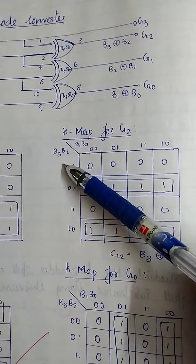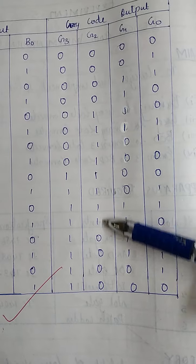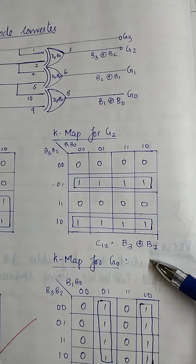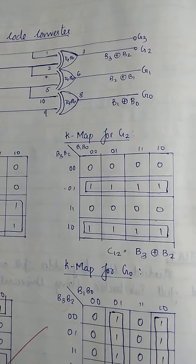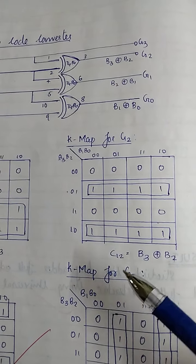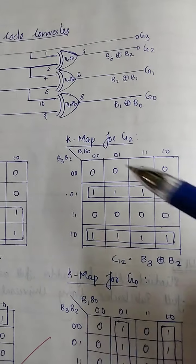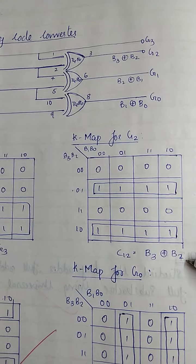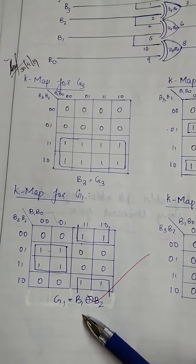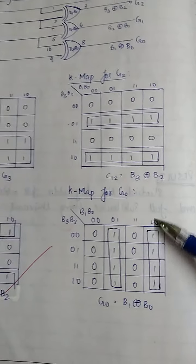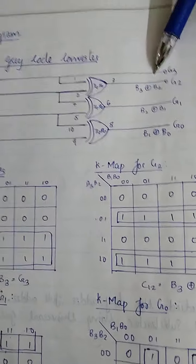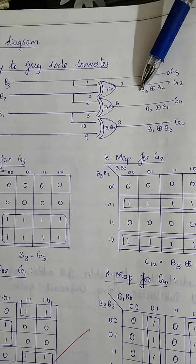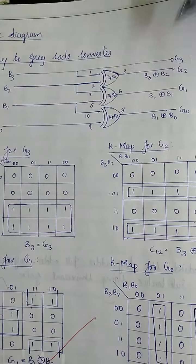That is G2. The input is B3, B2, B1, B0. You can use the K-map, and you can use the XOR operation. This is A·B̄ plus Ā·B, which is XOR. Now, using the map, G3 is equal to B3. G2 is derived as B3 XOR B2. You can use G1 and G0 similarly. After that, G3 can be taken directly.